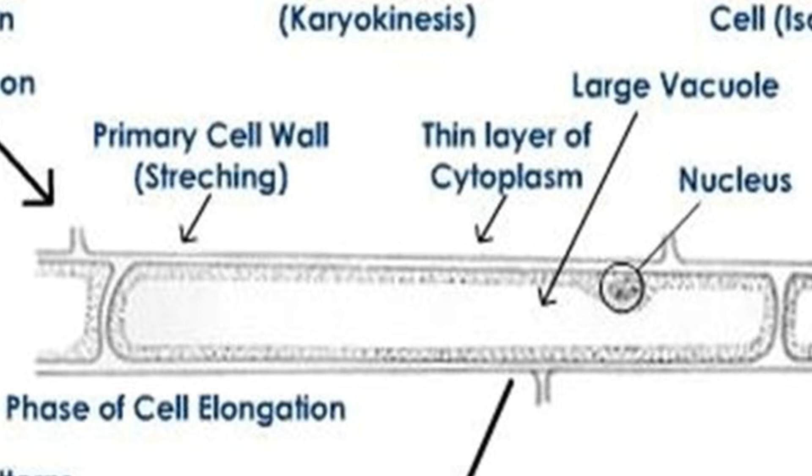Increase in the length of stems and roots is mainly brought about by elongation of cells. The pressure potential developed inside the cells stretches their thin cell walls.